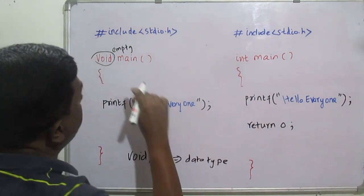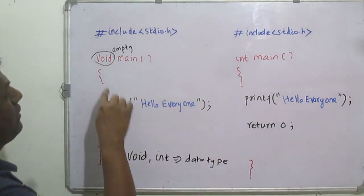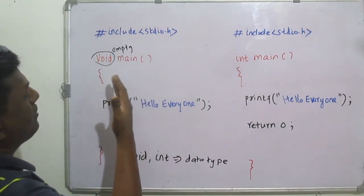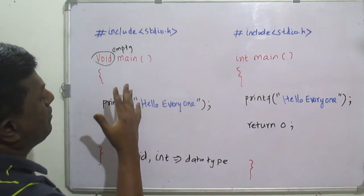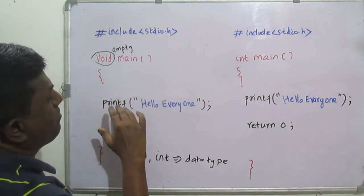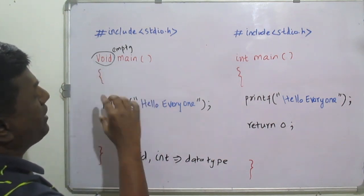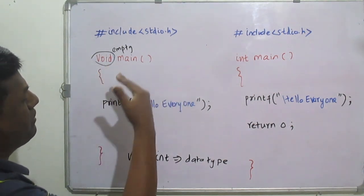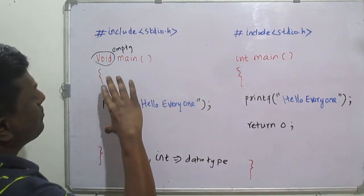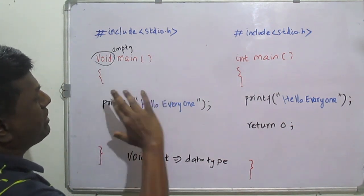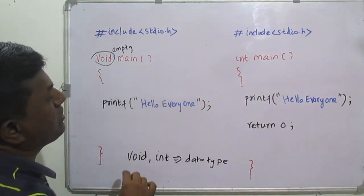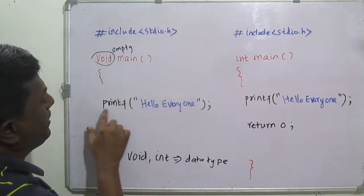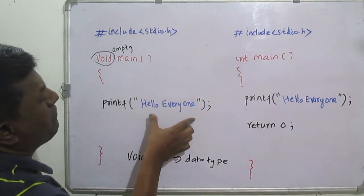When the return data type is void, it means whenever the program is executed on the local computer by the operating system, it returns nothing — void means empty. The program will not return anything to the operating system. Only the output, such as printing 'Hello Everyone', will be printed on the screen.